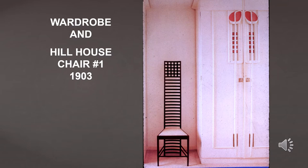Hill House Chair Number One features a cockatoo-shaped seat, and the ladder back extends all the way to the floor — those rungs have no structural function, just creating a rhythmic pattern. The exaggerated tall vertical of the back helps fill up the negative space created between the corner and the wardrobe.